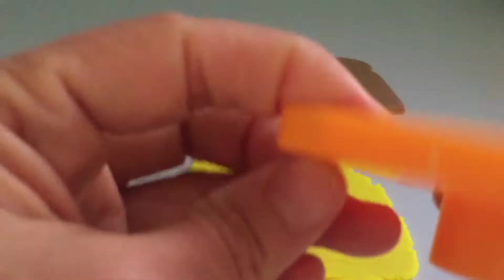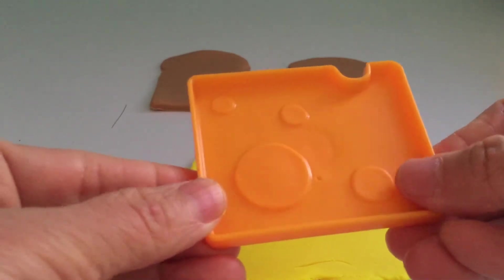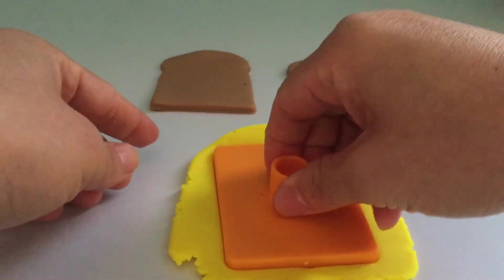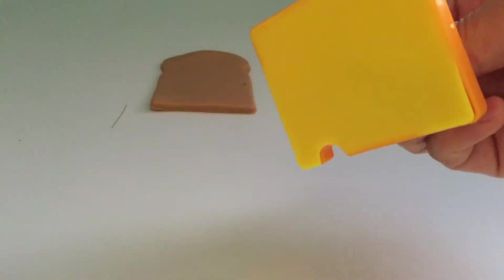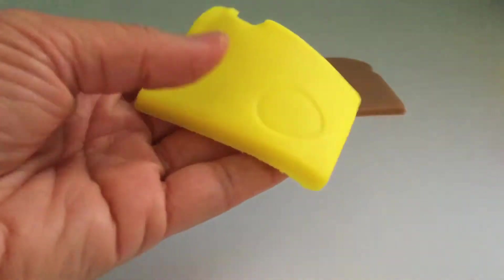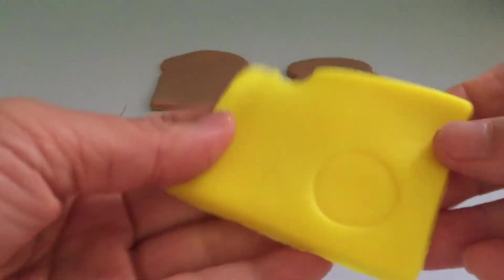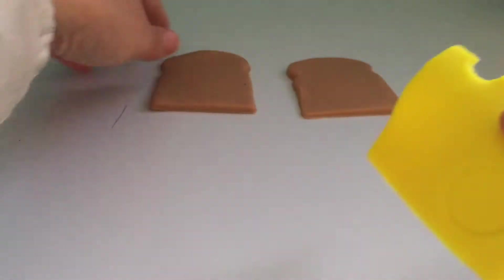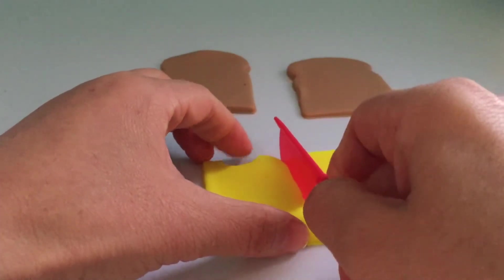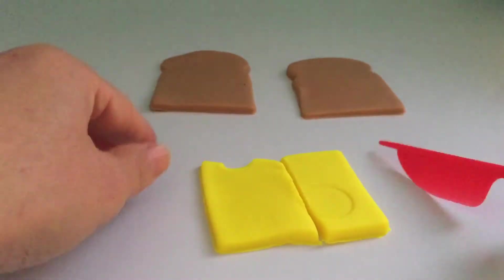With the yellow Play-Doh, I'm going to make a big piece of cheese. Now I'm going to cut the cheese into two pieces for our sandwich.